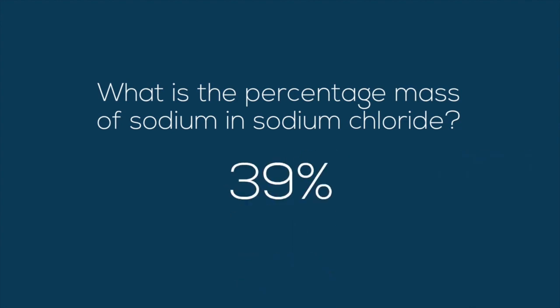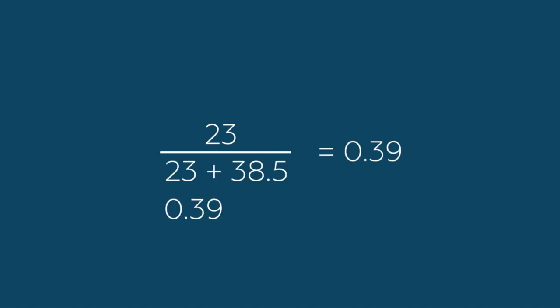Sodium makes 39% of the mass. We get that number by dividing 23 by the sum of 23 and 35.5, giving us 0.39, which we multiply by 100. Did you get that right?